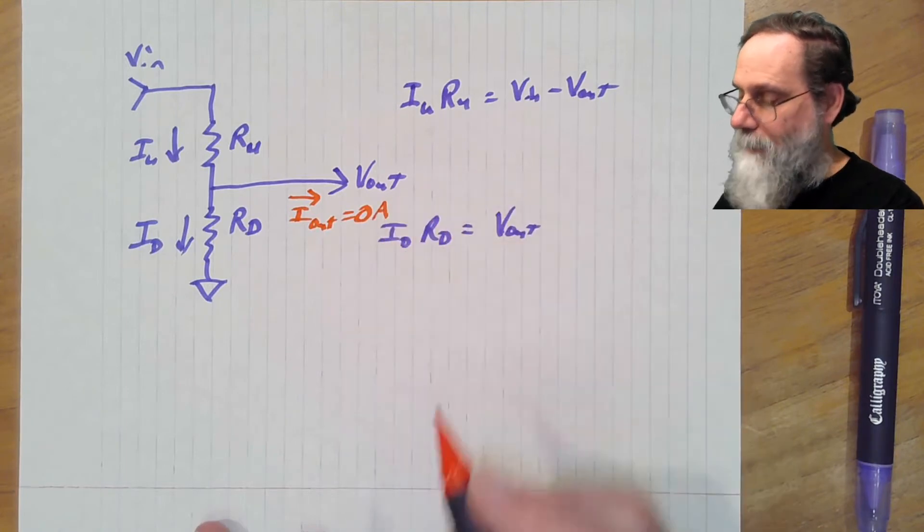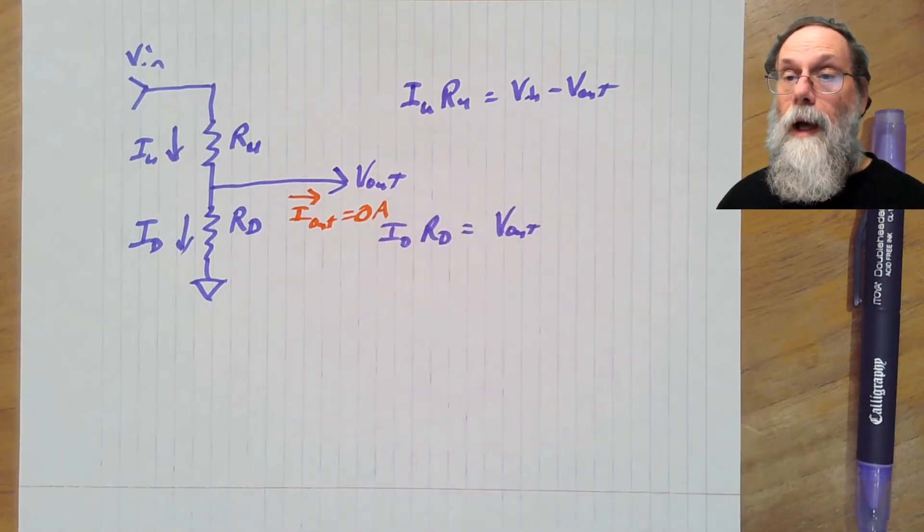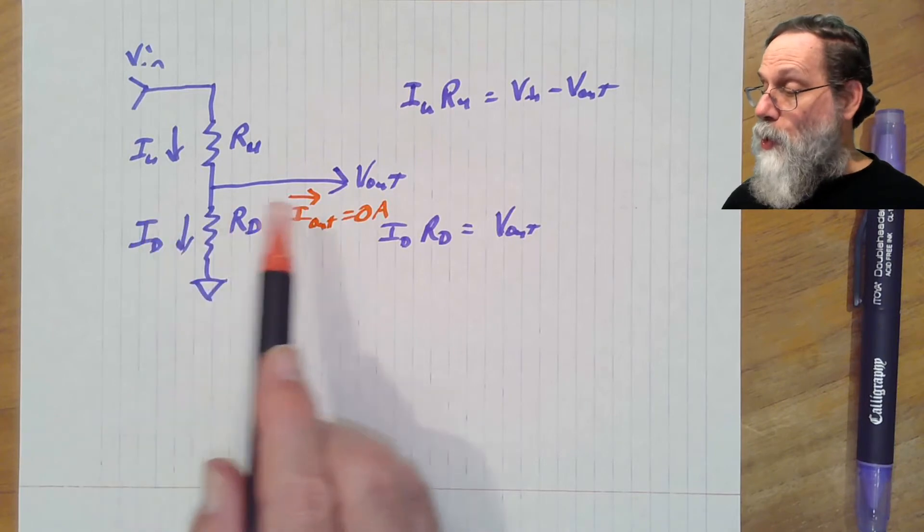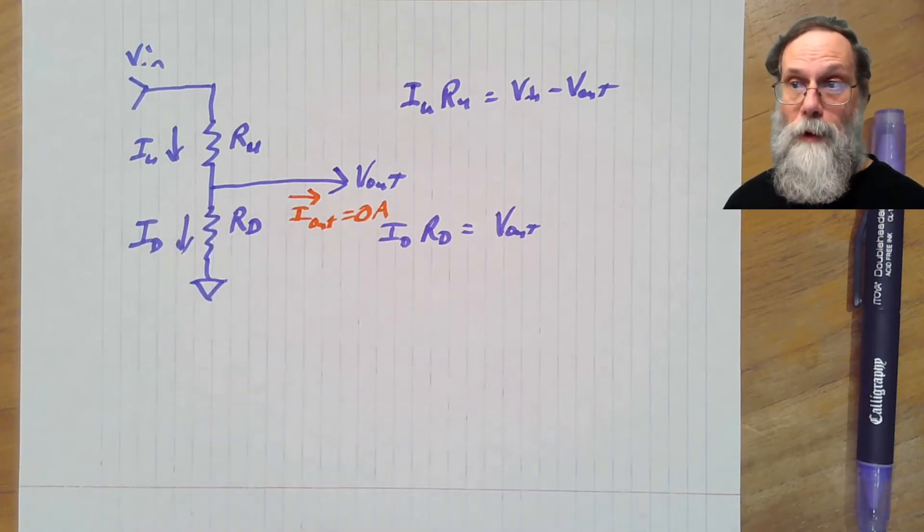So if we constrain this thing so that there's no current taken from the output port, so we can look at the voltage there, but we can't take any current from it.